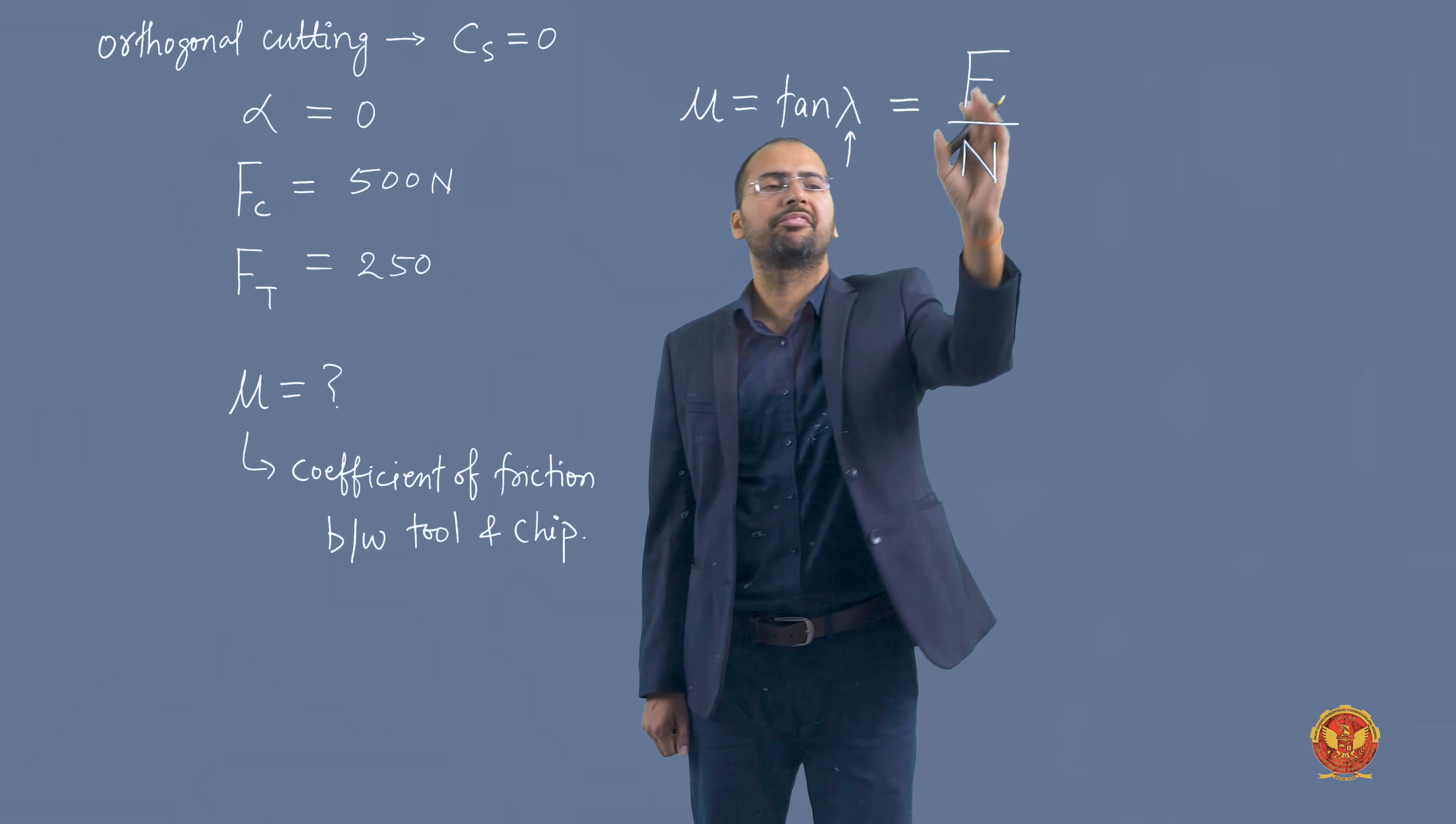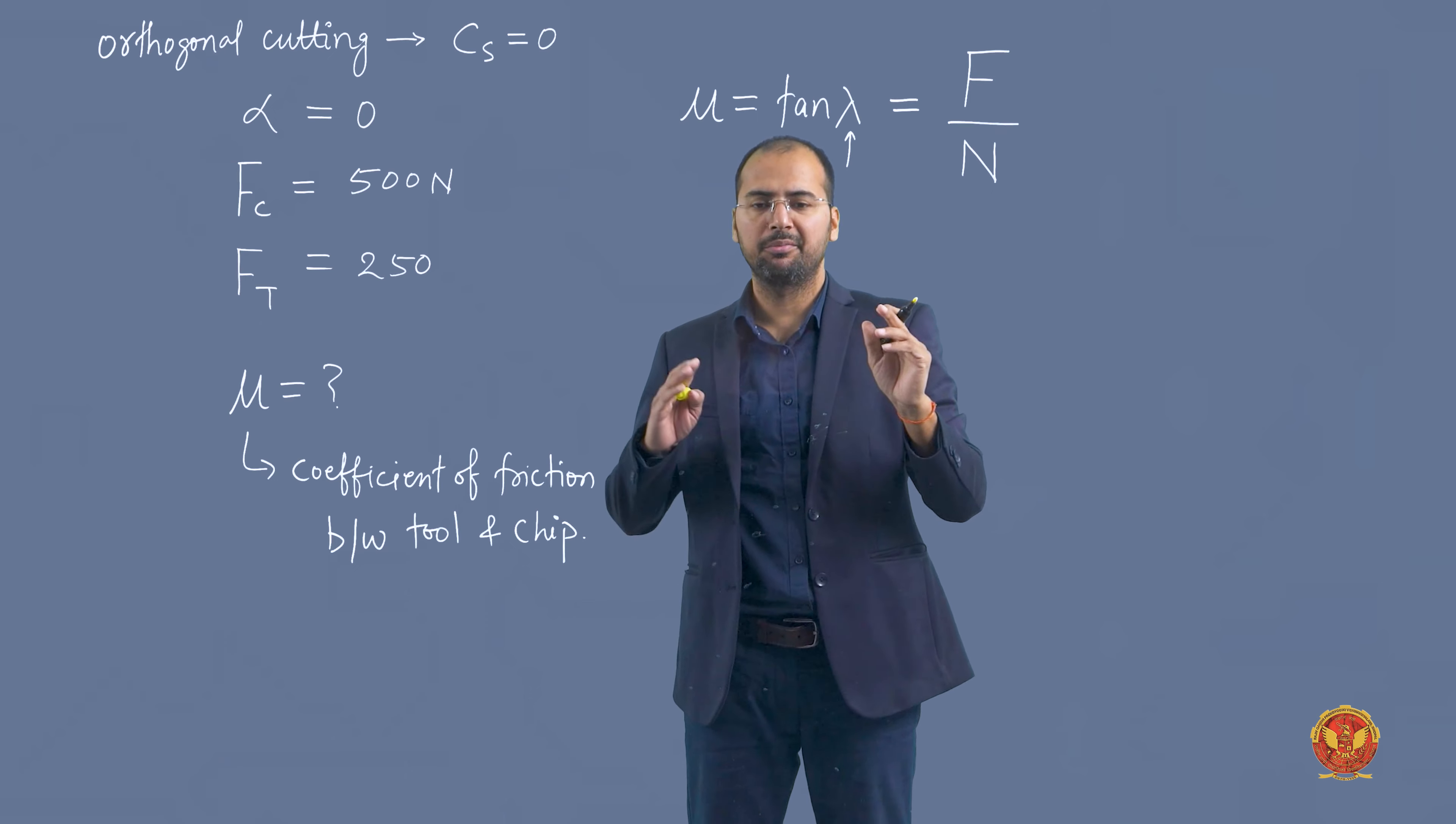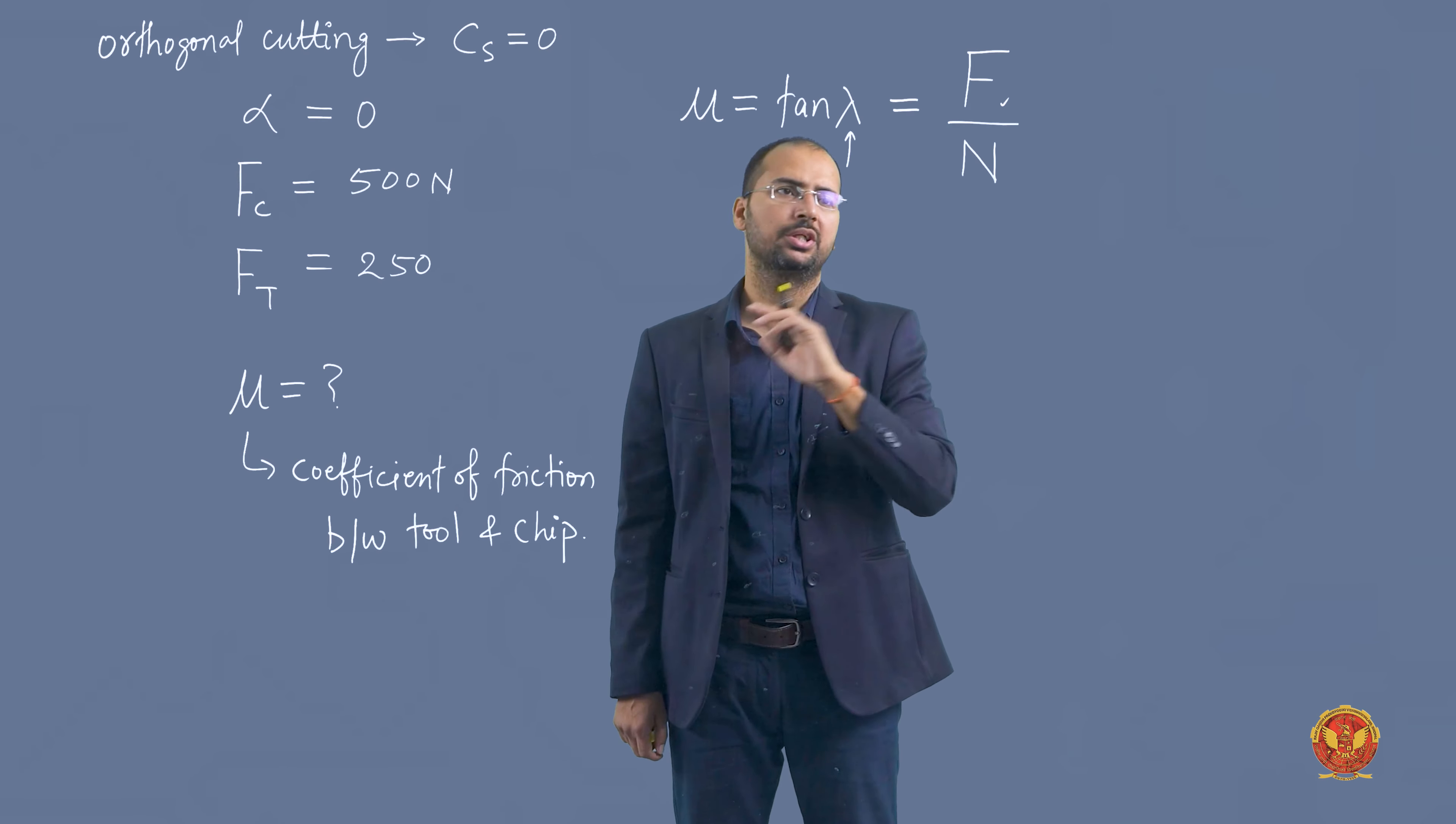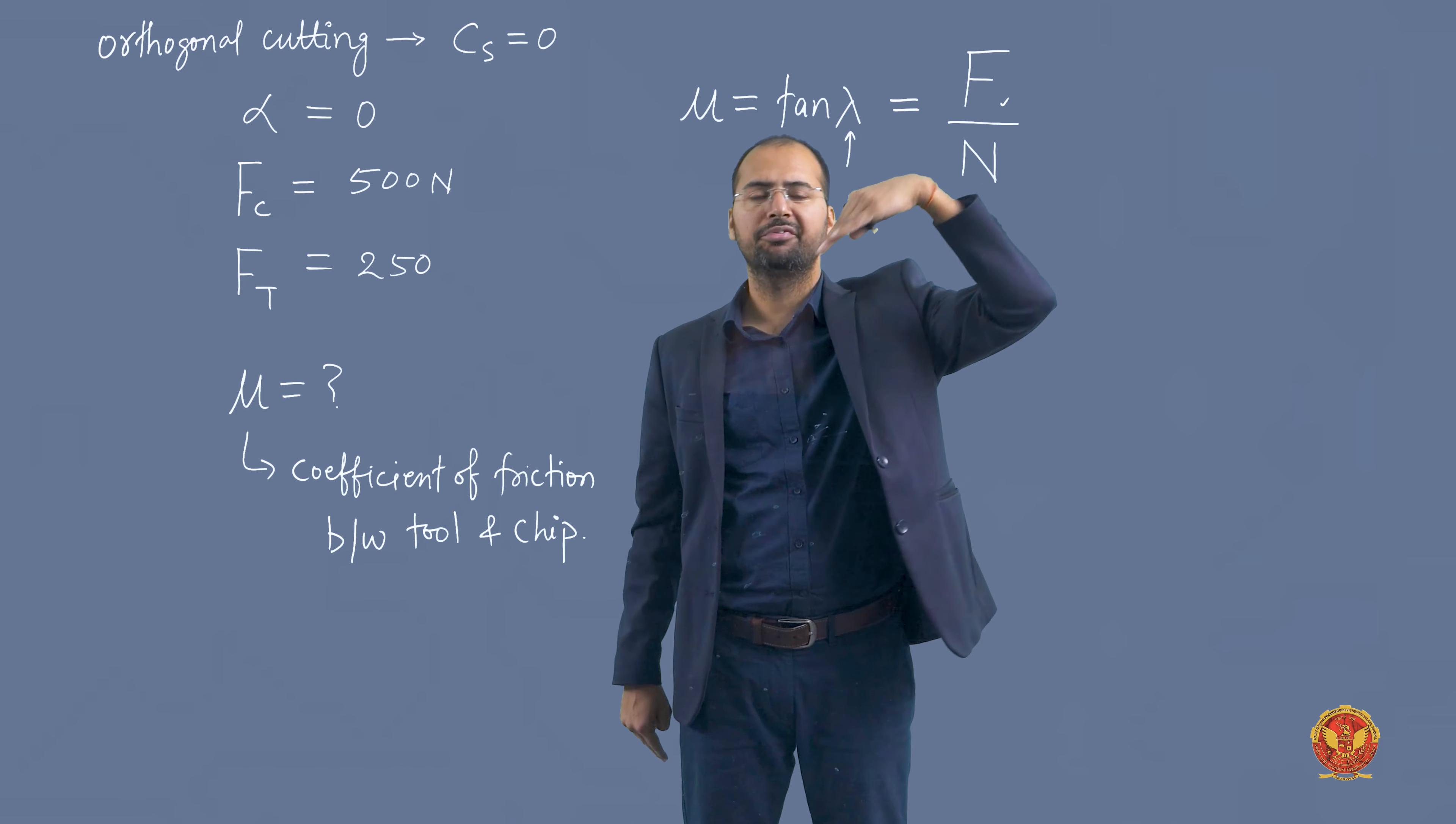Now let's see what f and n are. F is the frictional resistance of tool on chip. When the chip slides over the tool, the resistance produced is called frictional resistance of tool on chip. N is the normal force to the cutting face of the tool.